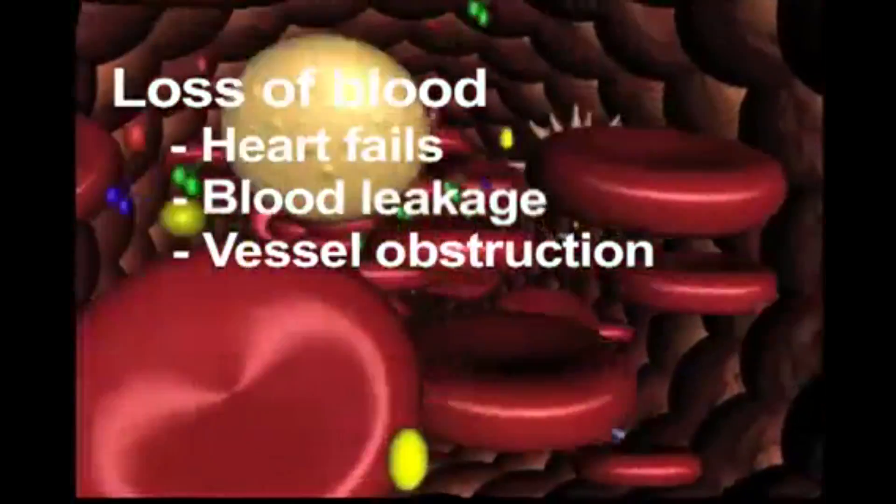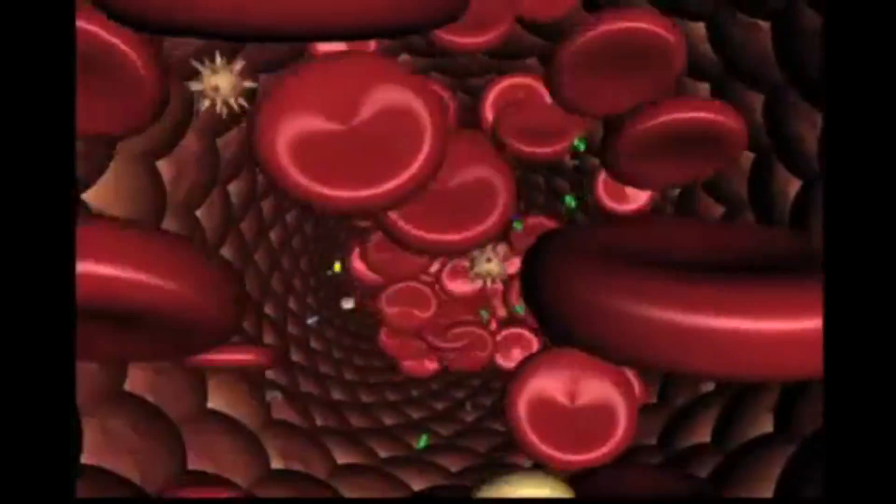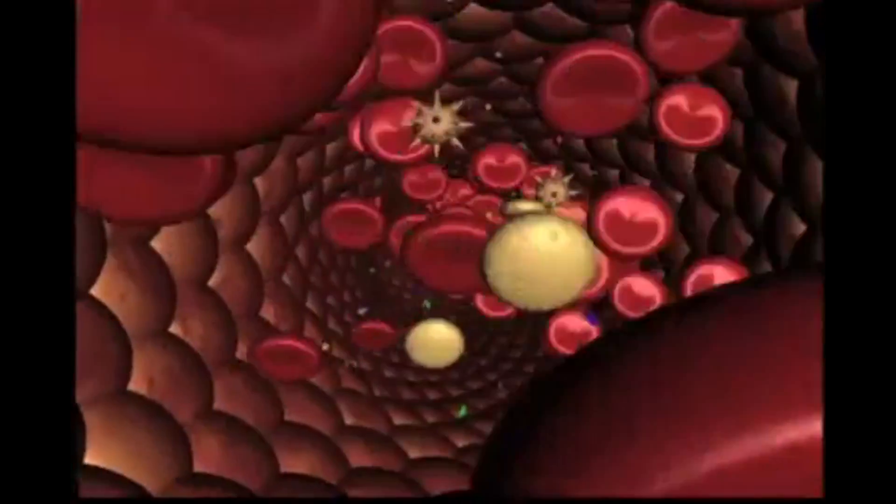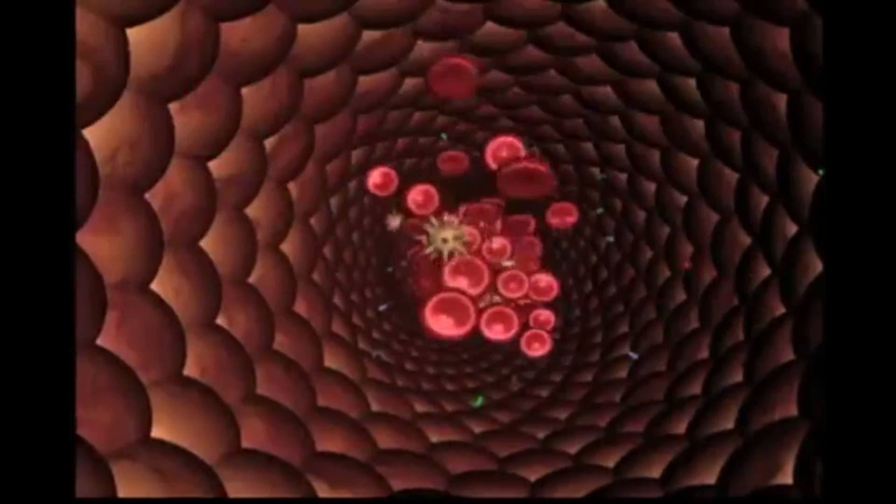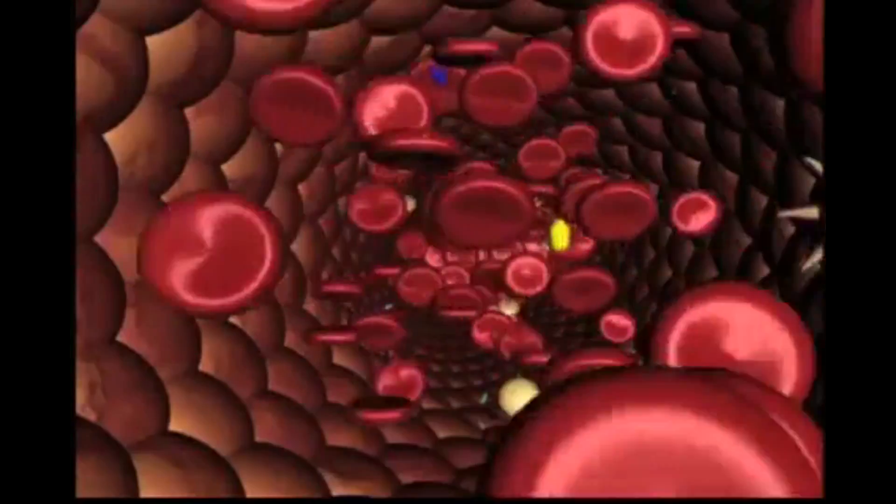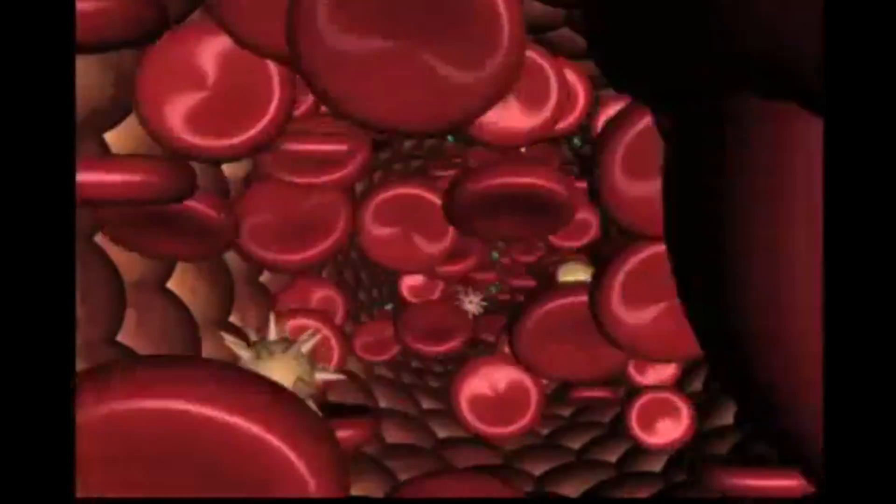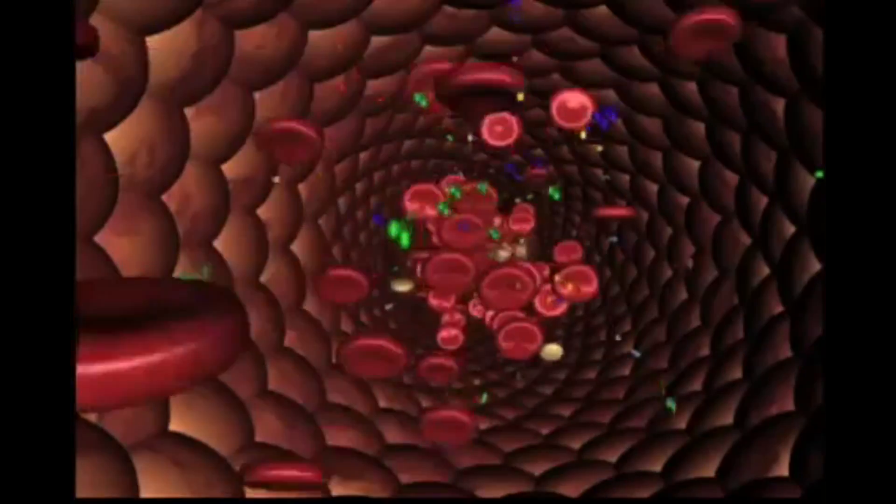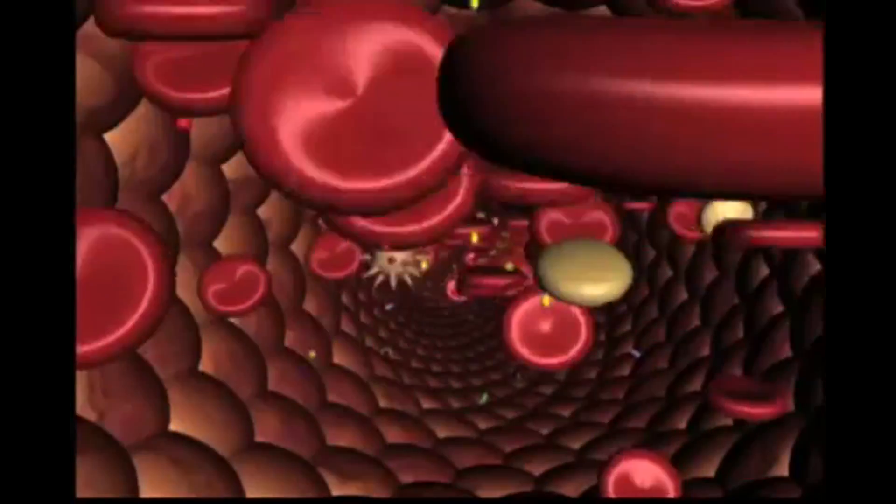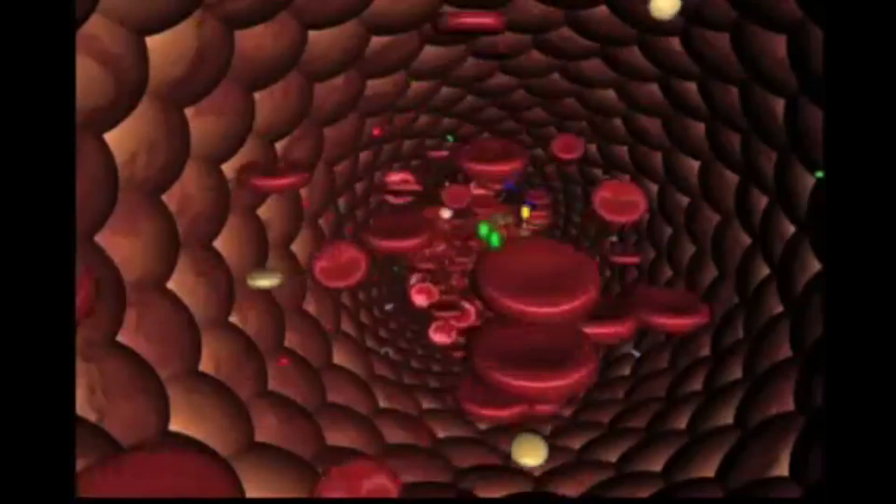The coagulation system has evolved to deal with the latter two events under normal circumstances by providing qualities which maintain blood in a fluid state within the vasculature while at the same time addressing leaks. This formidable challenge is met by nature, producing a three-component system which promotes vascular blood fluidity while anticipating the requirement for local blockade of extravascular blood leakage.